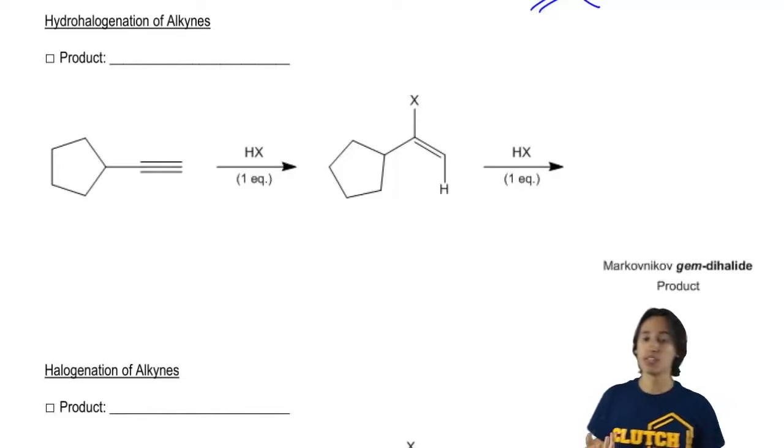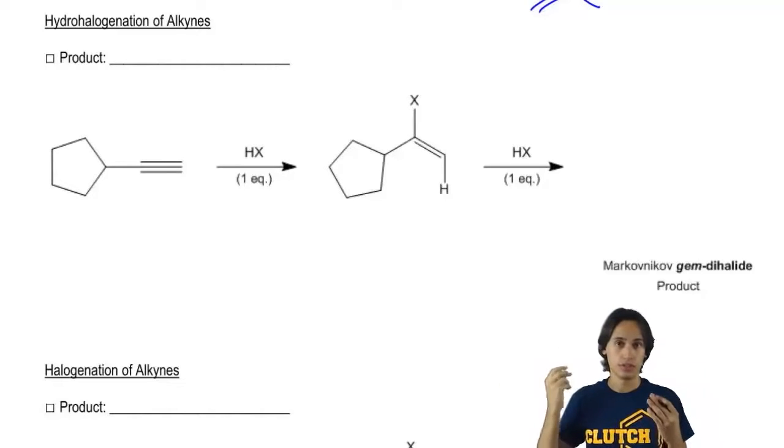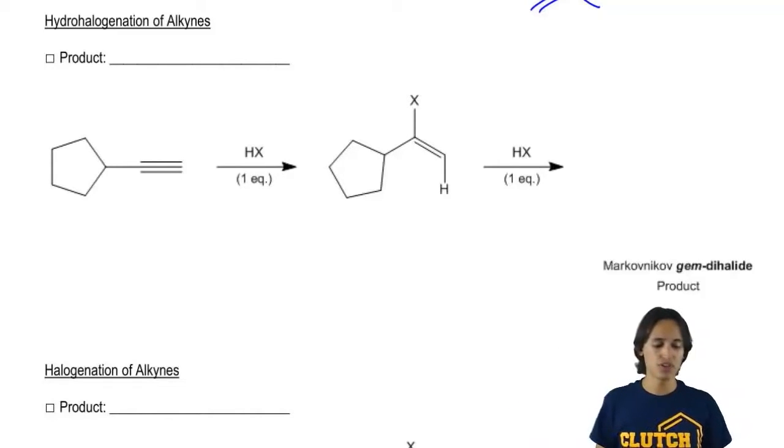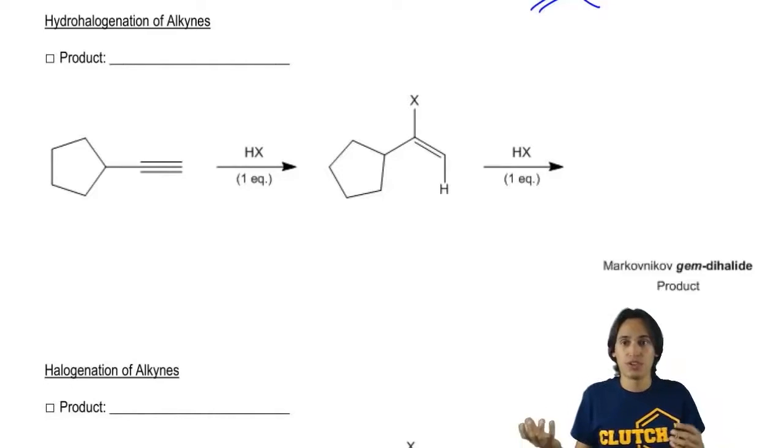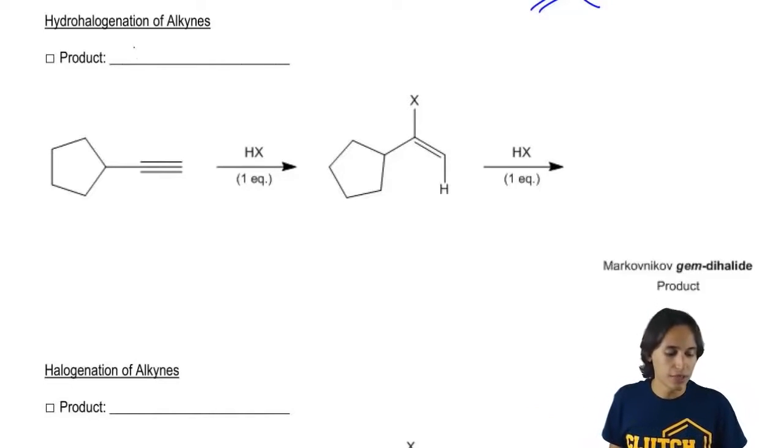If I were to react that one time, I would expect to get a Markovnikov halogen added. But it turns out that if you react this twice with alkynes, what you're going to wind up getting is actually gem dihalides.